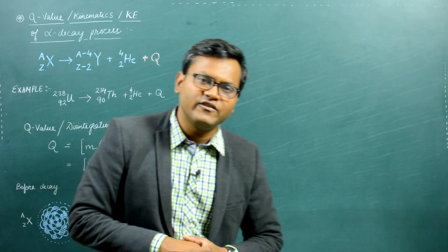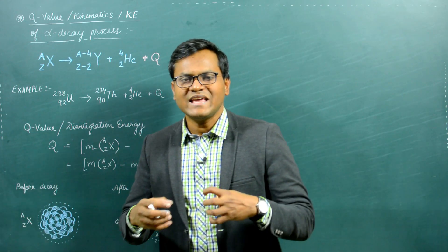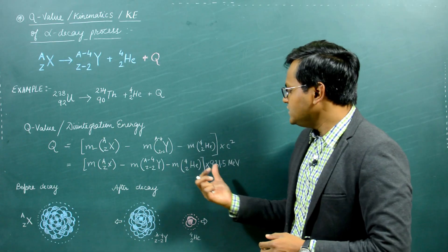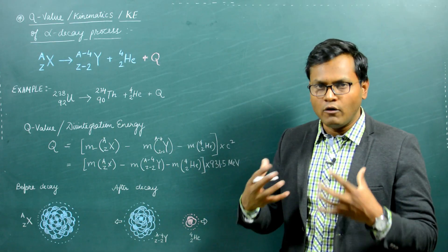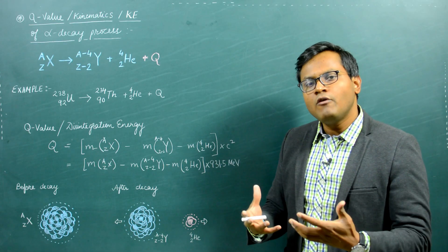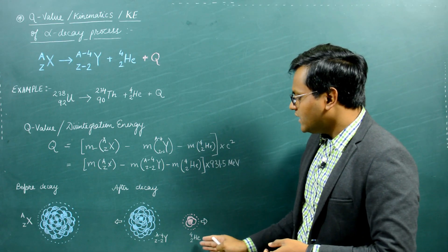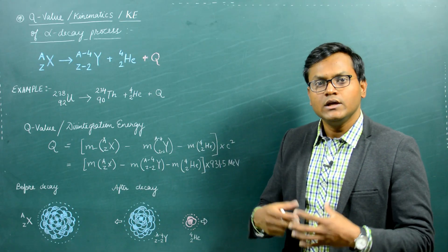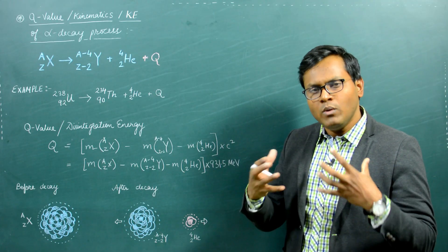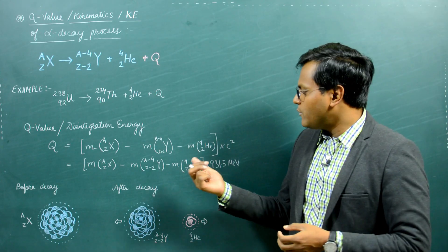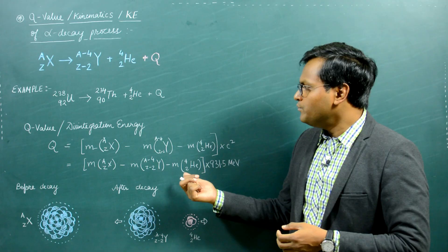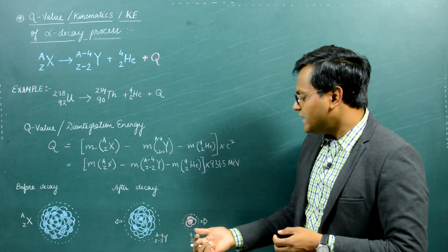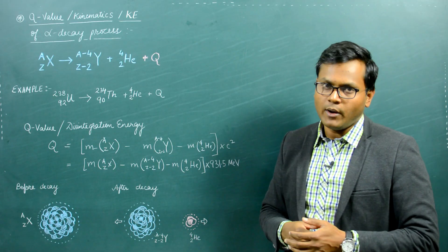What happens to this energy? This energy is given off in the form of kinetic energy of the alpha particle as well as kinetic energy of the daughter nuclei. The amount of Q value that goes off as kinetic energy of the alpha particle can be calculated by looking at the kinematics of this particular reaction.